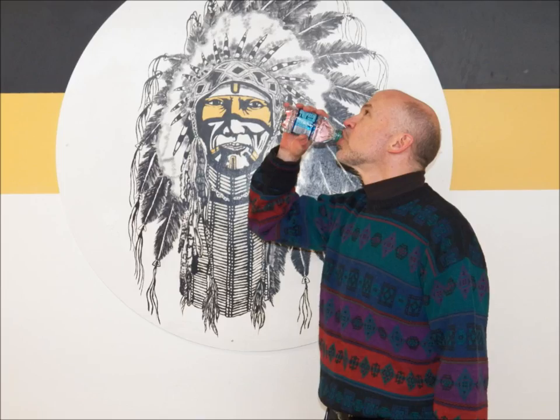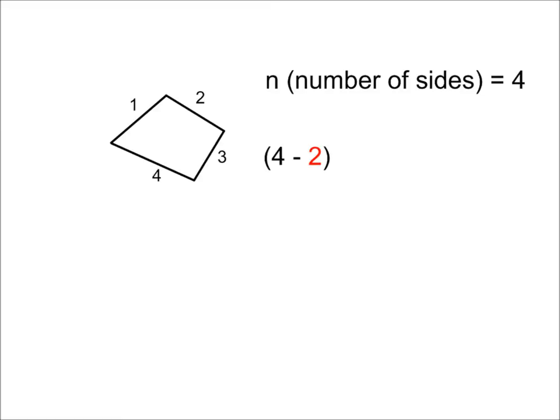It always looks right, there's no mistaking, when you subtract 2, n times 180. I take away 2, and this is crazy, I multiply by 180.